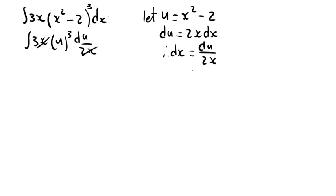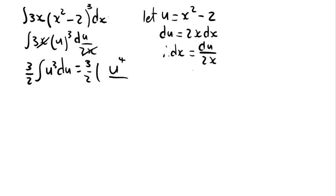You substitute: in place of x squared minus 2 you put u, and in place of dx you put du over 2x. As a result the x's will cancel and you will be left with 3 over 2 taken outside, multiplied by u to the power 3 du. You add one to the exponent to get 4, then divide by that 4, giving you 3 over 8 u to the power 4 plus C.